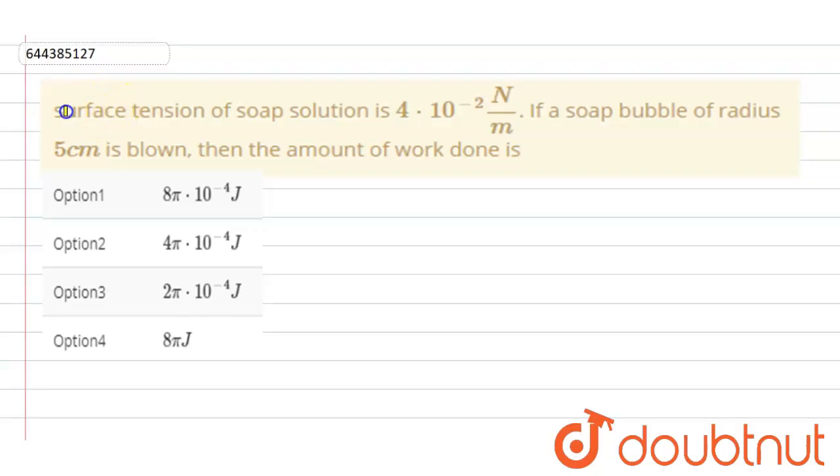Hello students. So the question is: the surface tension of soap bubble is 4 × 10^-2 newton per meter. If a soap bubble of radius 5 centimeter is blown, then the amount of work done is.